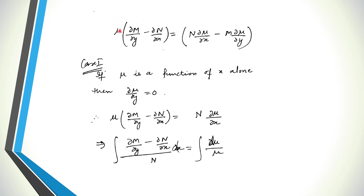Case 1: when mu is a function of x alone. If mu is a function of x alone, then the partial derivative of mu with respect to y is 0. Substituting this, we are left with one factor equal to another. Taking N to the other side — dividing by N — and separating mu to one side, we then integrate both sides: one side with respect to x and the other with respect to mu.